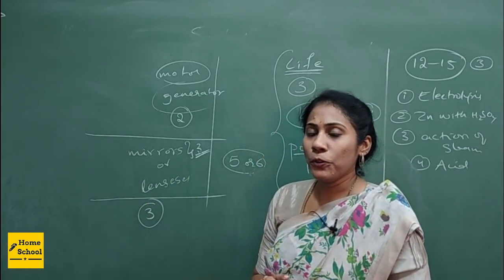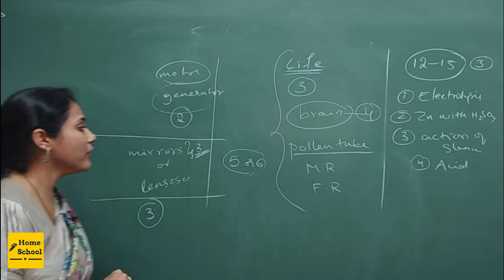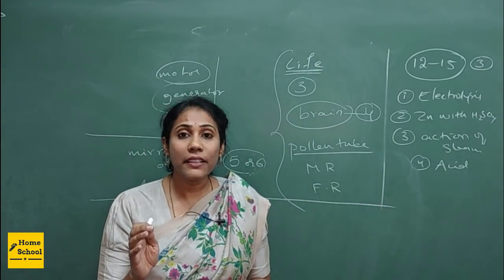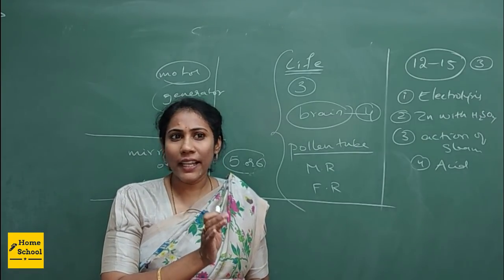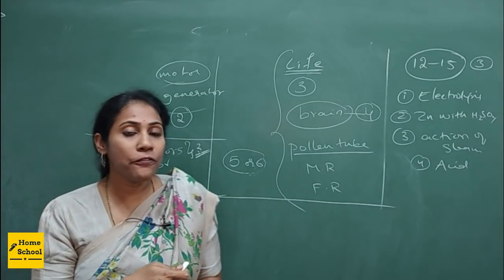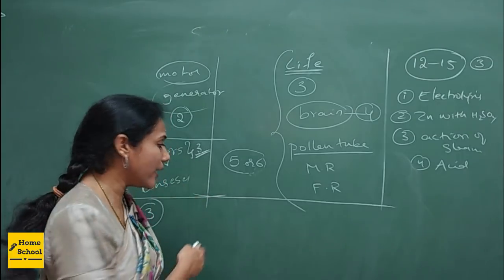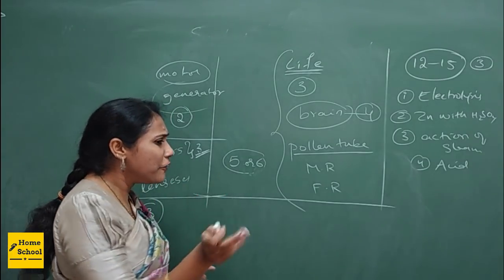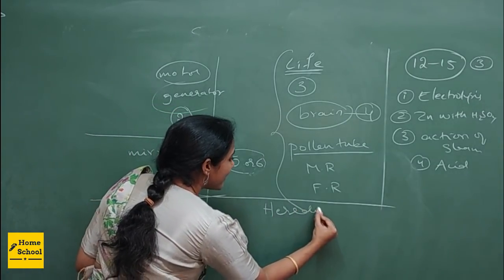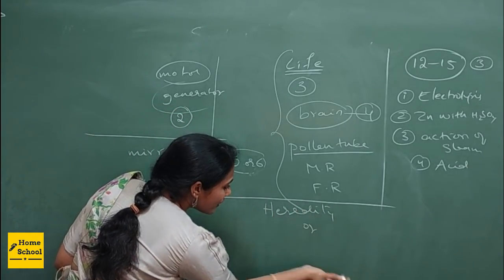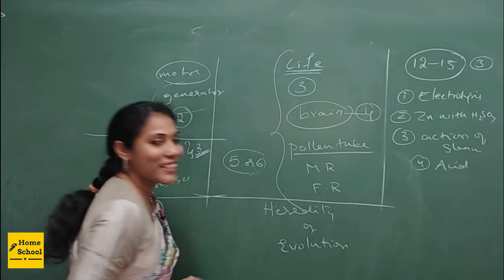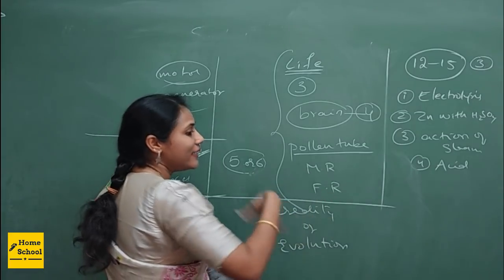Coming to the heredity and evolution chapter — from this chapter you don't actually have any diagrams, but you can do some smart work here. Definitely one four-mark question will come from heredity and evolution. They will ask either a question from heredity or a question on evolution. If you are perfectly studying heredity, that is more than enough.